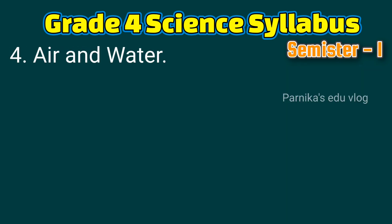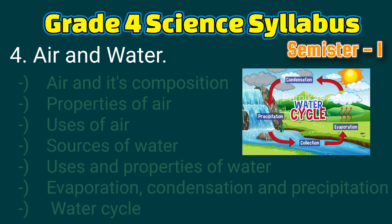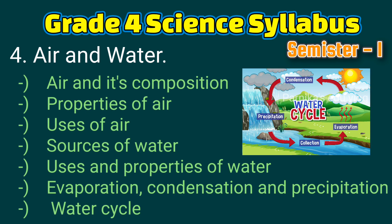The fourth lesson is air and water. In this lesson we have air and its composition, properties of air, uses of air, sources of water, uses and properties of water, evaporation, condensation, precipitation, and finally the water cycle. In this lesson we will learn about air and water and most importantly the water cycle.